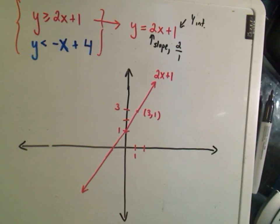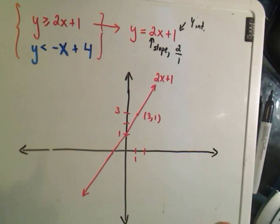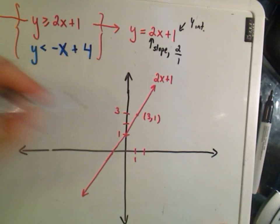With inequalities, you're either going to shade above or below the line. Basically, if it's y greater than, you're going to shade above. And the idea is, you take a point on either side of the line.